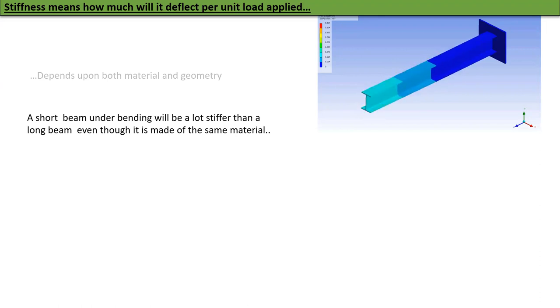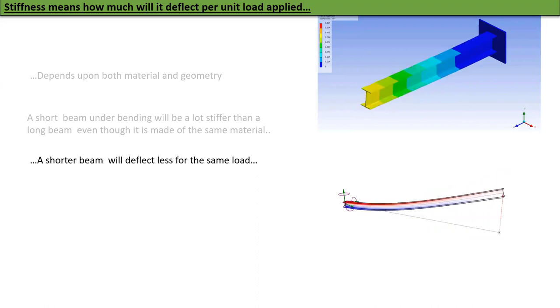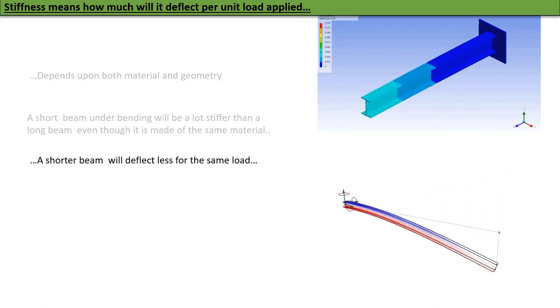A short beam under bending will be a lot stiffer than a long beam, even though it is made of the same material. A shorter beam will deflect less for the same load and will vibrate faster.